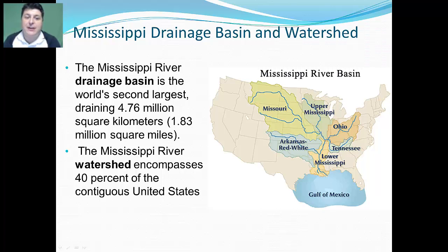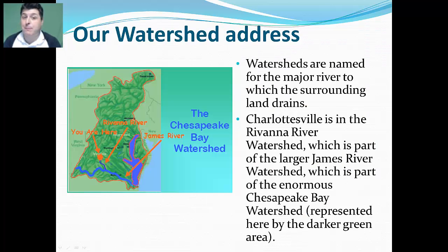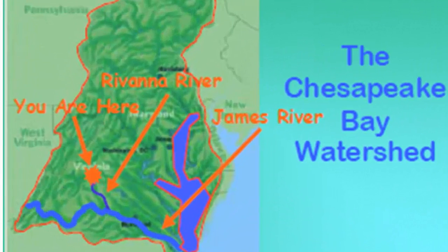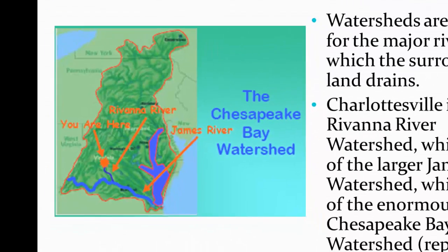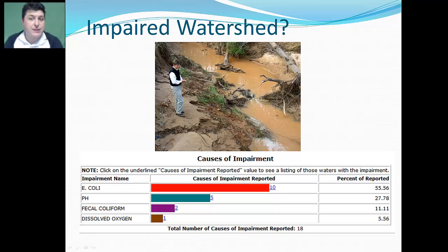All of that land area, as it drains into tributaries of the Mississippi, is bringing pollutants and sediment into the river, which impacts that particular waterway. And as that water drains to the Gulf of Mexico, it will also be impacted. Watersheds are named for the major river to which the surrounding land drains. Charlottesville is in the Rivanna River watershed, which is part of the larger James River watershed, which is part of the enormous Chesapeake Bay watershed, represented by the darker green area in this diagram.